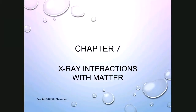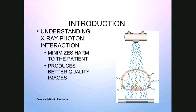This is chapter seven, X-ray interactions with matter, from your Essentials of Radiographic Physics and Imaging book, starting on page 74. When we speak about matter, we're typically talking about the patient. By definition, matter is anything that has mass, occupies space, and has shape. Understanding X-ray photon interactions — what actually happens in the patient when we make an exposure — is important.